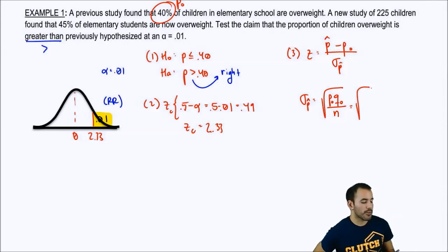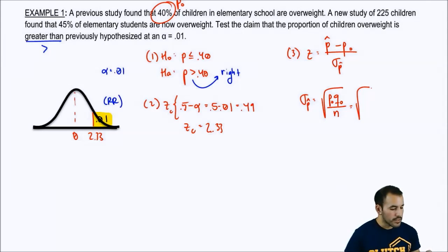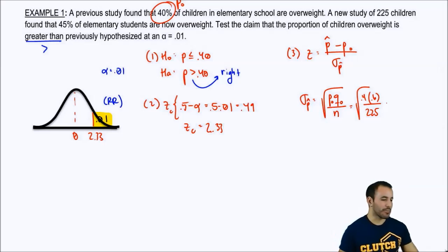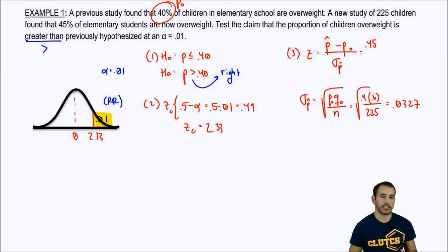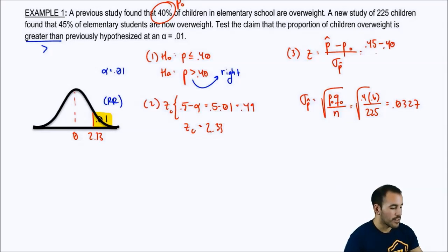So, it's the square root of the population proportion Q, which is 1 minus that, over N. So, here we have the square root of, and P naught is 0.4 times 0.6, all divided by 225, right? And so, 0.4 times 0.6, so we end up getting 0.0327. And then from there, we plug that into our full problem, right? So, we got 0.45, which is the proportion from our sample that we got from our new 225 children, minus 0.40, all divided by 0.0327, and that gives us 1.53.